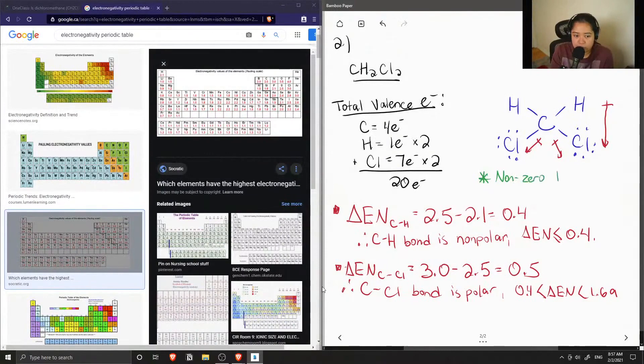So I'll say up here we have a non-zero dipole moment in the molecule. So therefore, dichloromethane is polar.